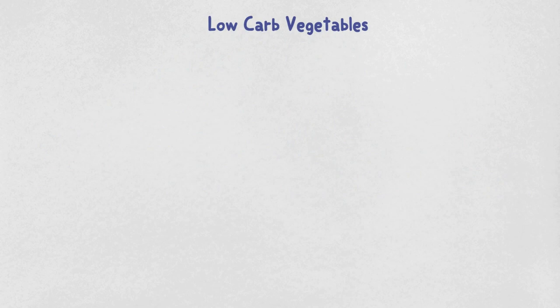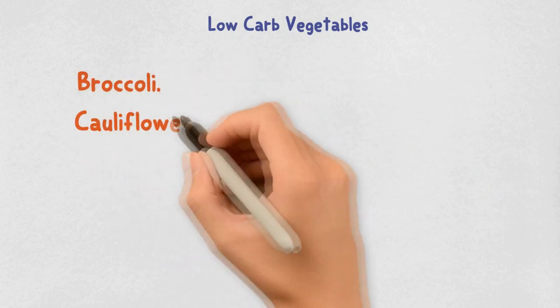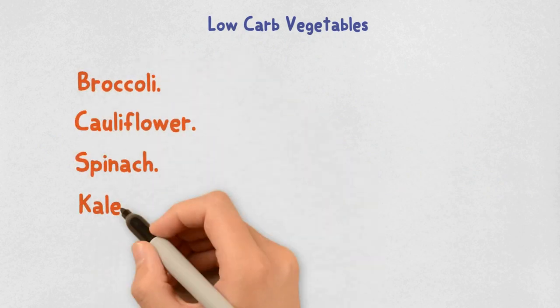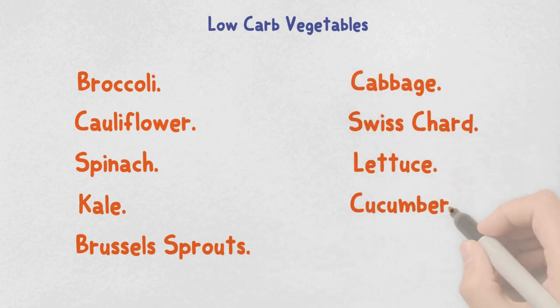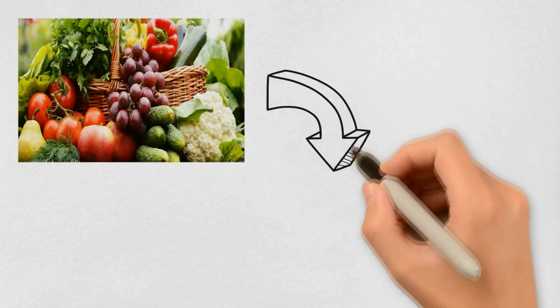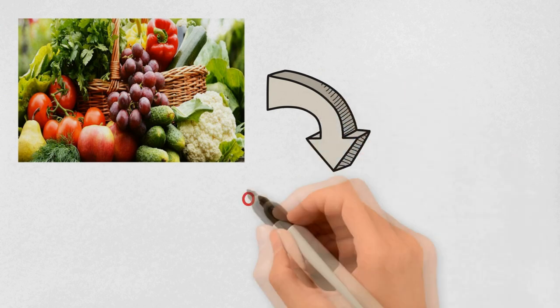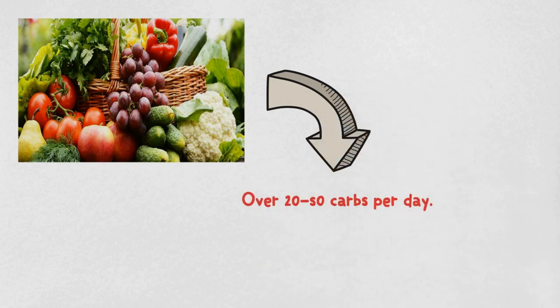Low-carb vegetables are broccoli, cauliflower, spinach, kale, Brussels sprouts, cabbage, Swiss chard, lettuce, cucumber, and celery. Don't be afraid to load your plate with these low-carb vegetables. You can eat massive amounts of them without going over 20 to 50 net carbs per day.